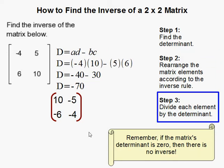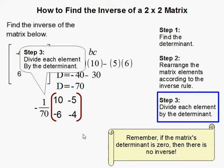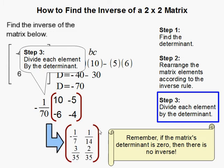And then you need to divide each element within the matrix by the determinant. So I got to divide everything by 70 or multiply by 1 over the determinant. Same thing. So that gives me negative 1 seventh for this element, 1 over 14, and so on and so forth.